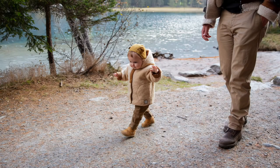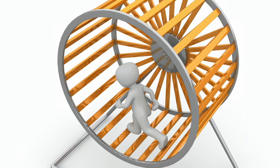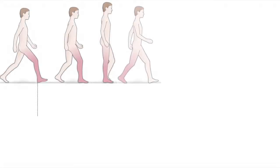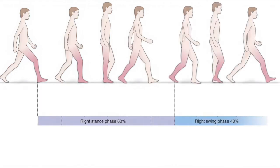Now that we have covered a history of our bipedalism and locomotion, let us delve into the specifics of walking and running gait. Walking and running gaits are cyclical movements — that is, they are recurrent movements with distinct but related and repeating events. A single gait cycle is defined as the period from one initial contact of one foot to the following initial contact of the same foot. In walking gait, there are two sub-phases which partially overlap: stance and swing.